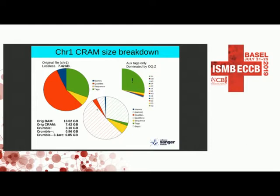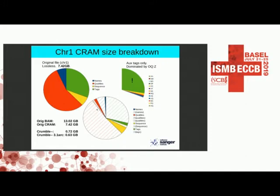Going one step further and removing bases known to be incorrect saves about another 20% on top of quality reduction. With most quality values and read names now gone, the difference between CRAM 3.0 and 3.1 becomes less significant in this scenario, since those were the main areas where CRAM 3.1's improvements applied.